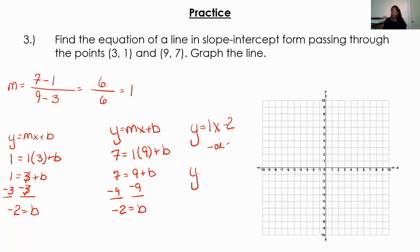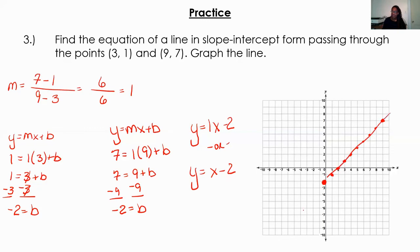So my equation is Y equals 1X minus 2, or you can simply write it as Y equals X minus 2. The 1 is assumed to be in front of the X whether you see it or not. Starting at the Y-intercept of negative 2, my slope is positive 1, so I go up 1 and to the right 1. If I continue that pattern, there's point (3, 1) being crossed. The other point is (9, 7), and if I continue on this path, I cross that point too. Here's the equation of the line through (3, 1) and (9, 7).